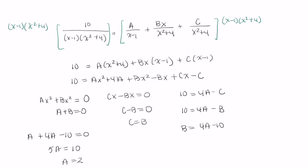Now that I know what A is, I can put this 2 here into this equation to solve for B. So B is equal to 4 times 2, which is 8 minus 10, so B is equal to negative 2. I know that C is equal to B, so that means C also has to equal negative 2.